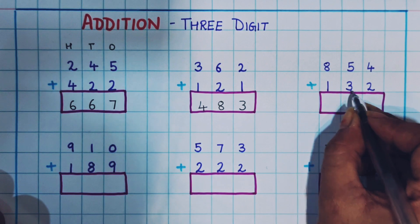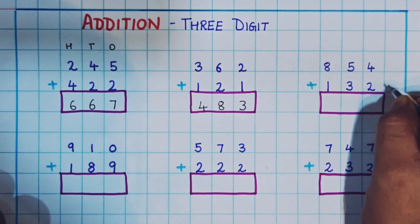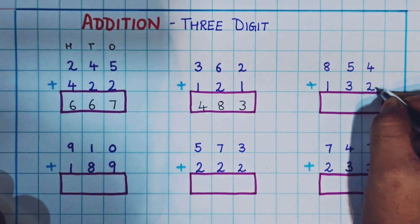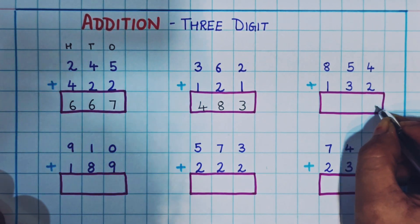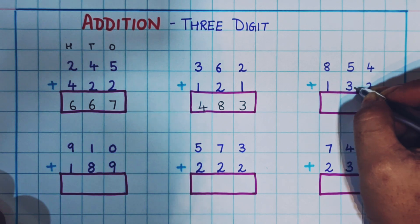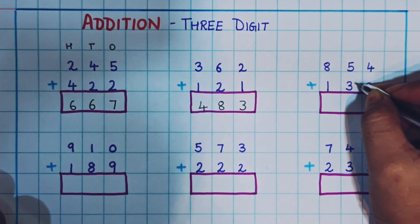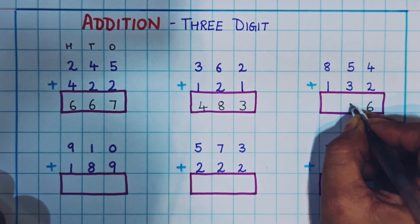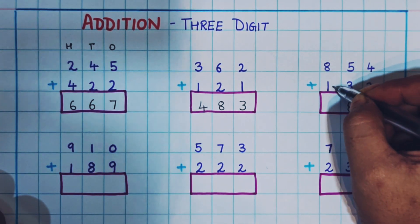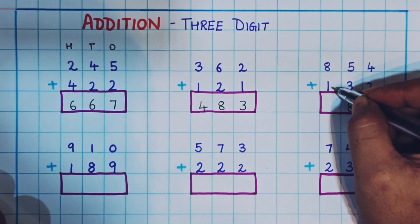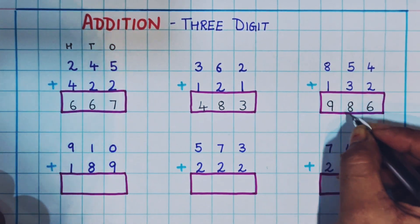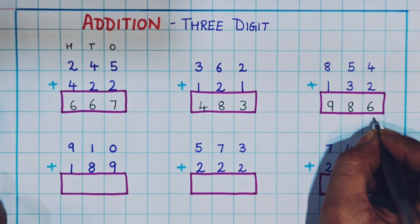Now let's do the next one: 854 plus 132. Add 4 plus 2 — that is 6, write 6 here. Then 5 plus 3: 5 in the mind, 6, 7, 8 — here I will write 8. Now 8 plus 1: 8 in the mind plus 1 is 9. So the answer is 986.